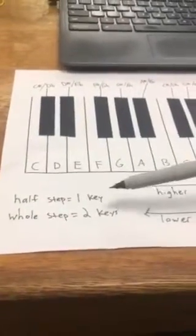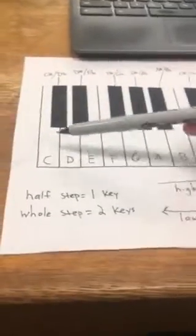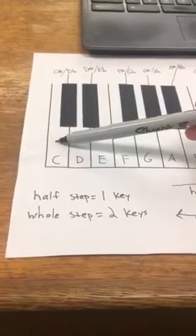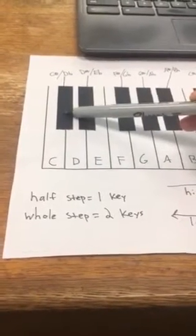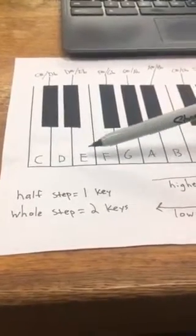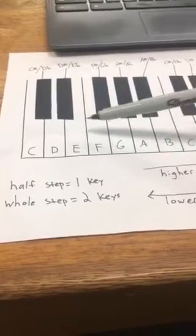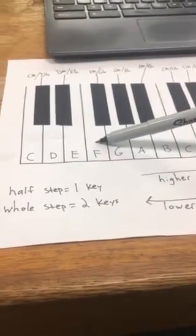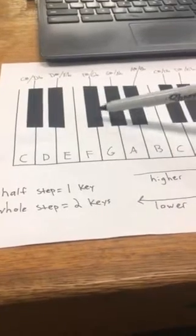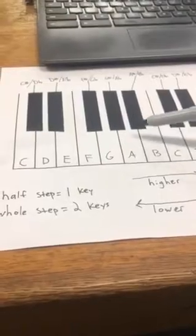When you count a half step, you are only counting one key over. If I'm on C and I want to move one half step up, I go one. Let's say I wanted to move a half step from here. I only need to move one key. Half step up from here would be one, and then like this. So you have to count the black keys and the white keys.